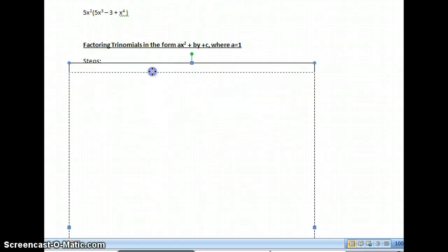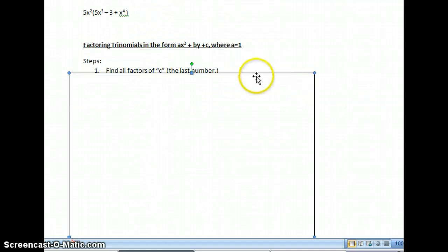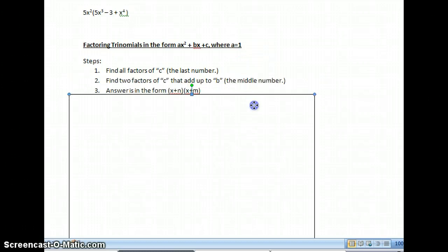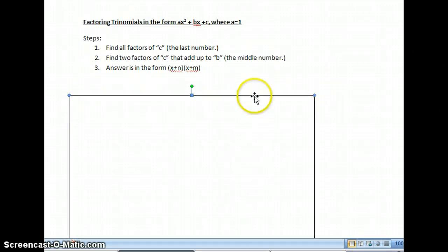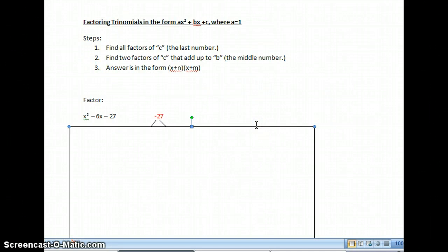Now, if I'm factoring a trinomial in the form ax squared plus bx plus c where a is 1. I'm going to scroll down here and go through the directions and show you. So it's in this form where in front of the x there's nothing. There's really a 1 there, but we say nothing. We start with find all the factors of c, the last number. I'm going to find all the factors of negative 27. Now, after you do these a while, you're not going to find all of them. You'll efficiently find the right ones.